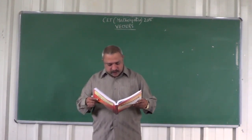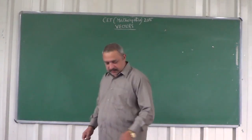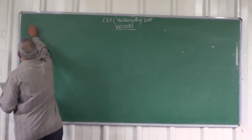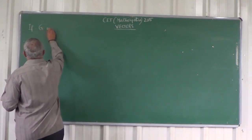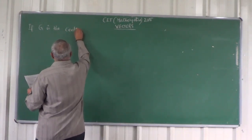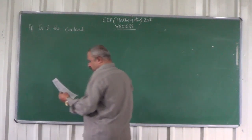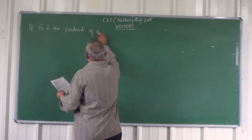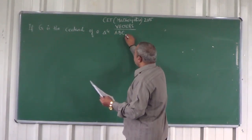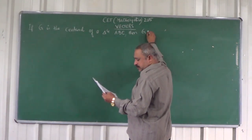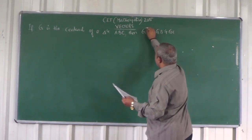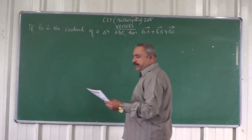If G is the centroid of a triangle ABC, then find vector GA plus vector GB plus vector GC. These are all vectors — vector GA plus vector GB plus vector GC.